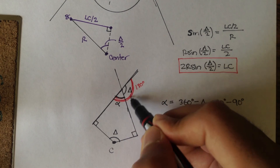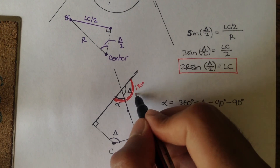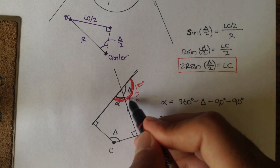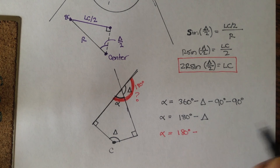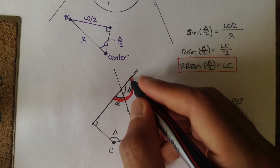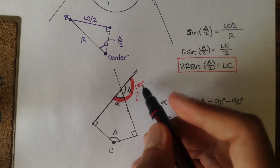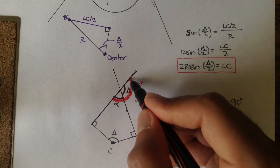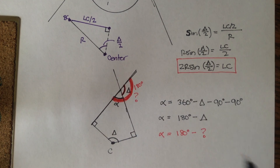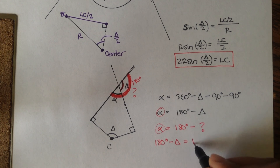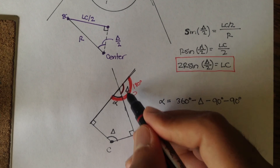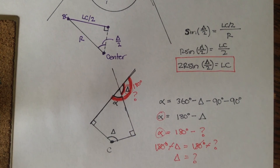From the quadrilateral, we found alpha = 180 minus delta. If we call the central angle 'question mark,' then since alpha and question mark are supplementary, alpha = 180 minus question mark. Setting the two expressions equal: 180 minus delta = 180 minus question mark, so delta equals question mark. Therefore, the central angle is indeed delta — and that's the proof.